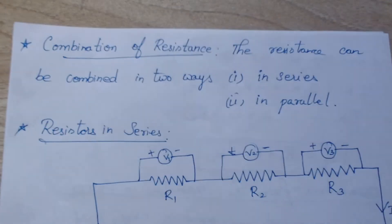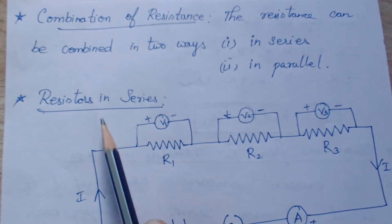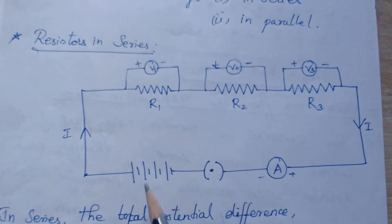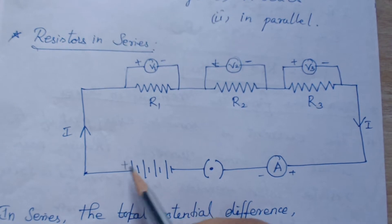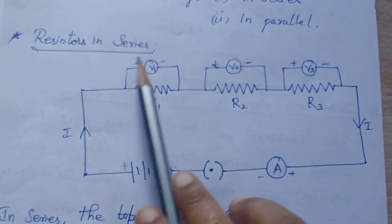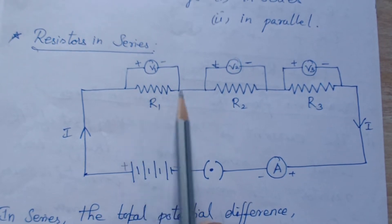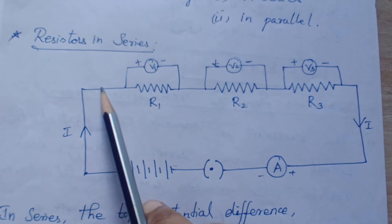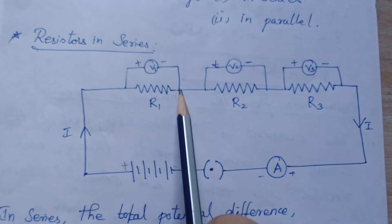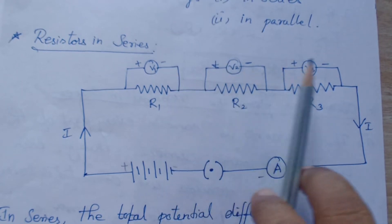First we will see what will be the observation when the resistors are connected in series. This is how we connect the resistors in series. Current is flowing from the positive terminal through resistance R1, R2, and R3. Voltage is connected across the resistors, because the potential difference exists only across the resistors. Potential voltmeters are connected across each resistor.